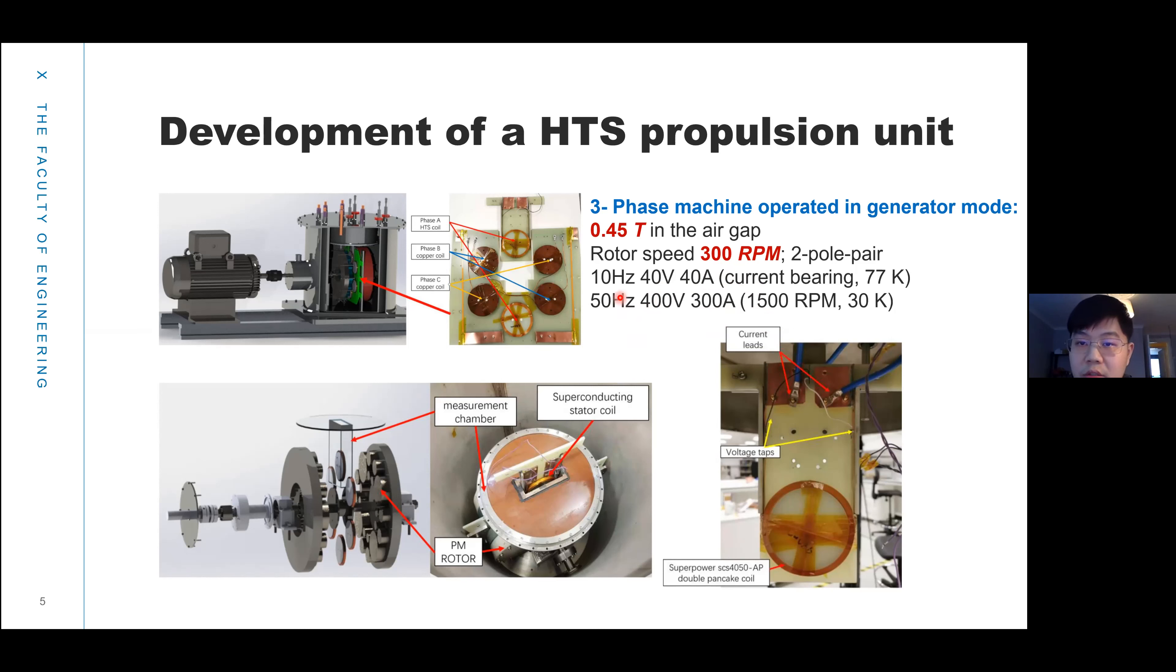Now the power rating of the machine can generate 10 hertz, 40 volts, 40 amps. In the future, we will develop this machine to 50 hertz, 400 volts and 300 amps using a helium gas system.